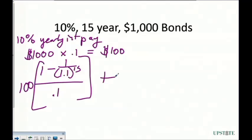And that's going to be divided by R. And then we're going to add on to that. We're going to have our payment here, which is our maturity value, which is that $1,000 divided by the 1.1 to the 15th power.